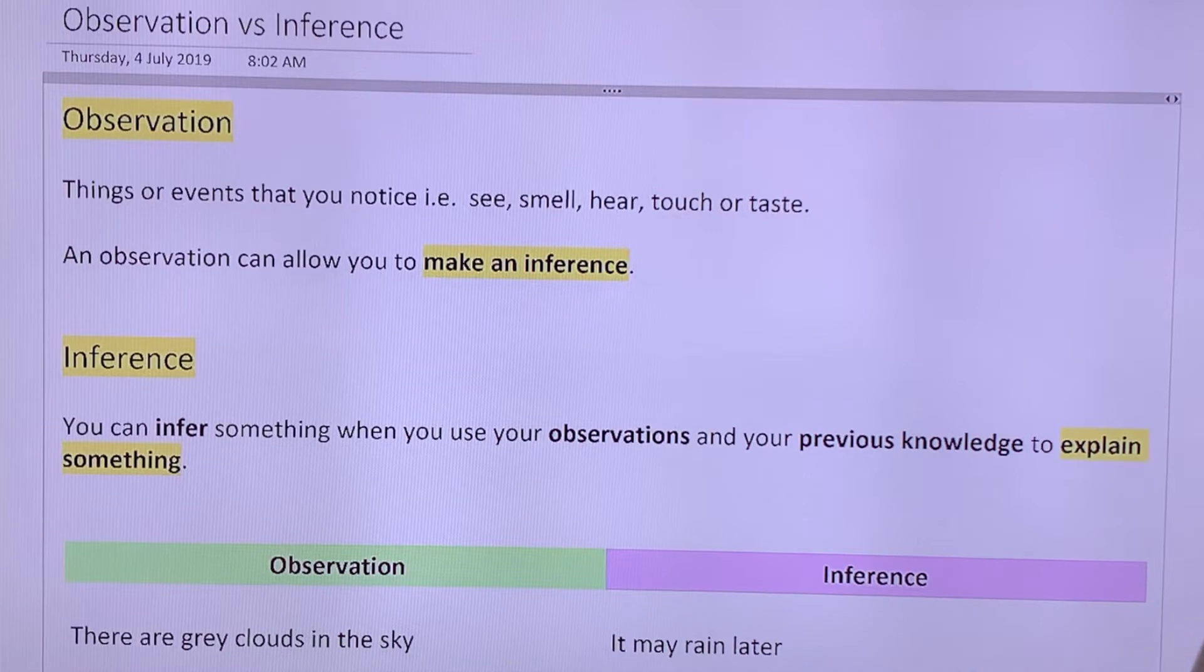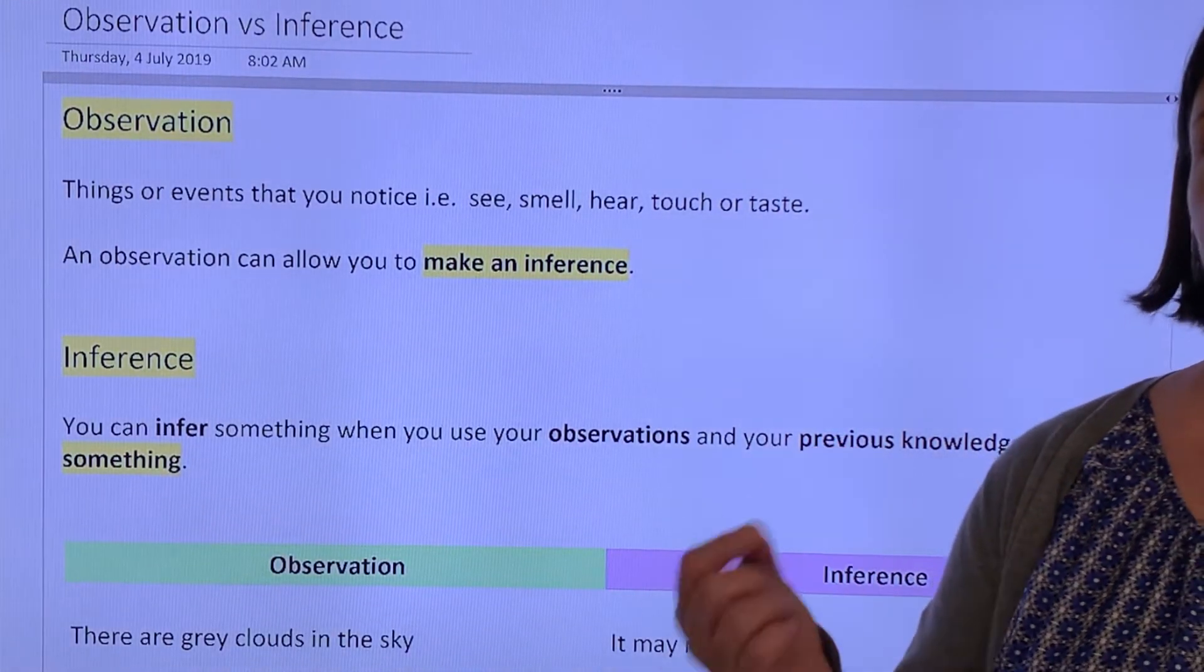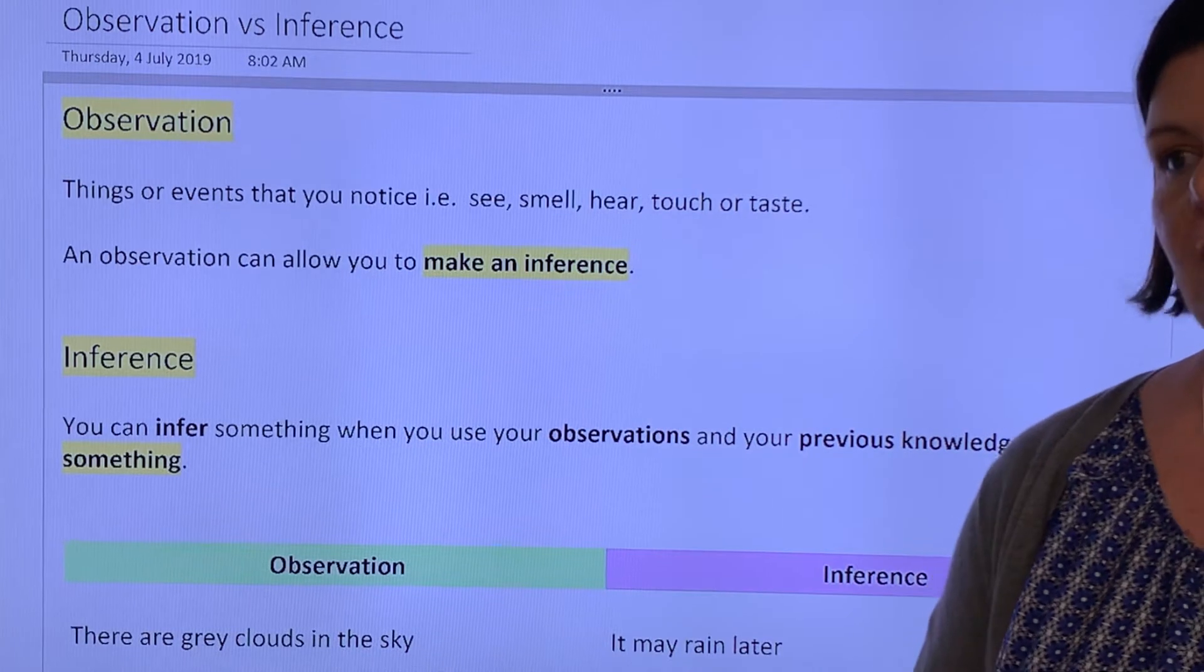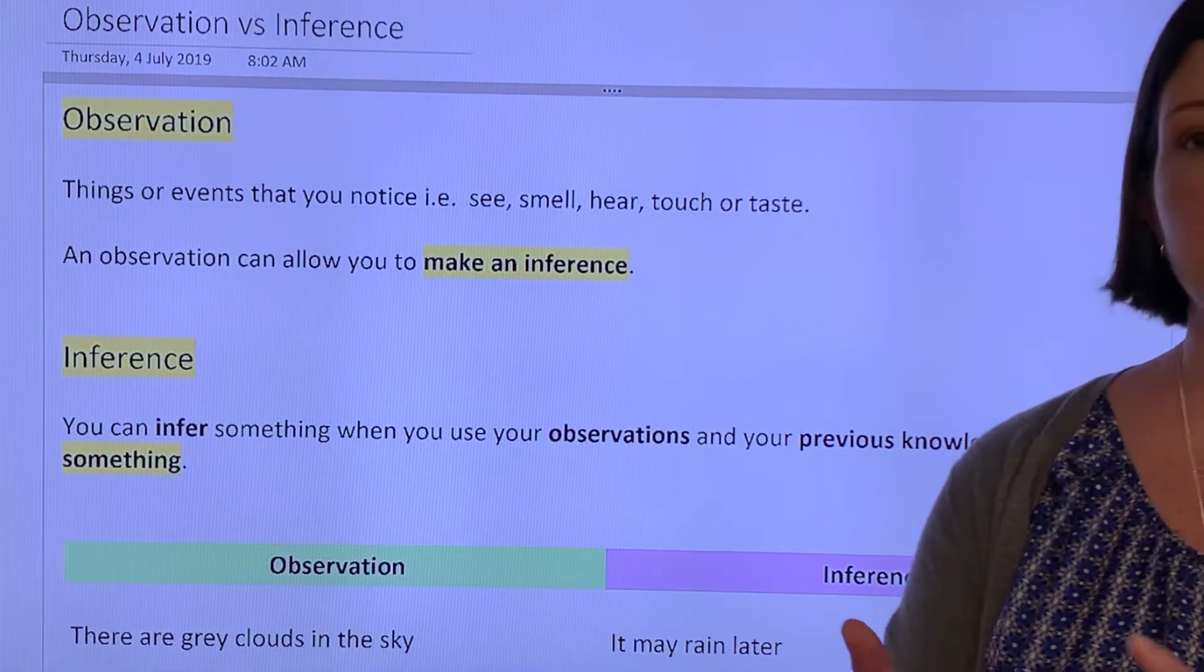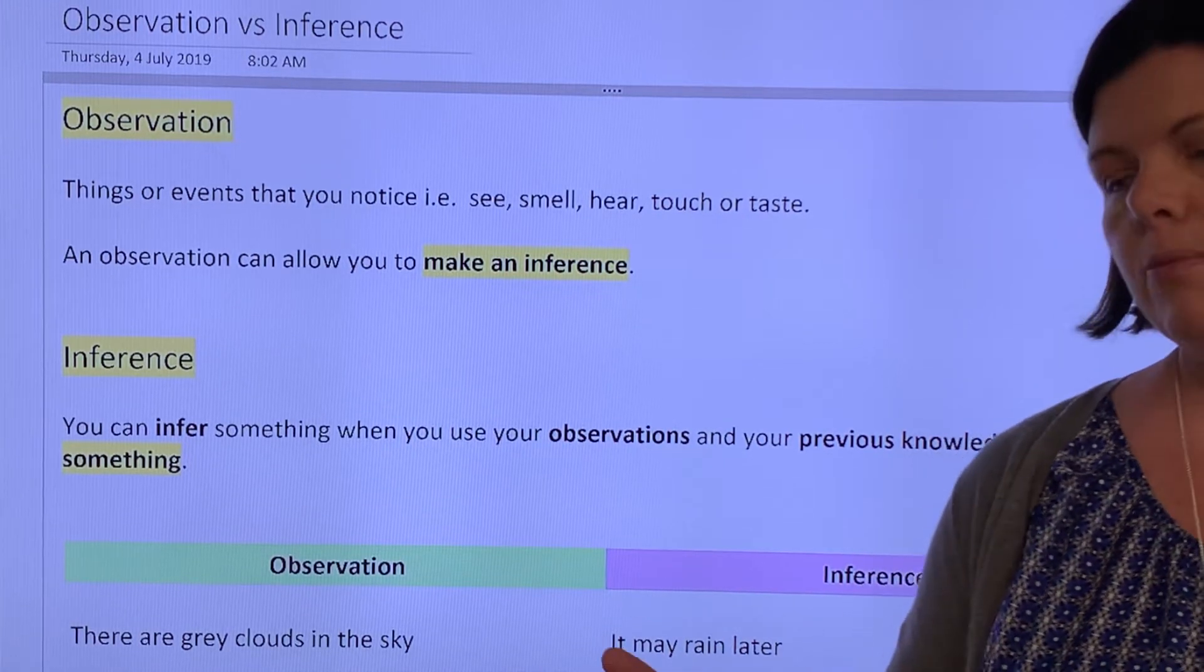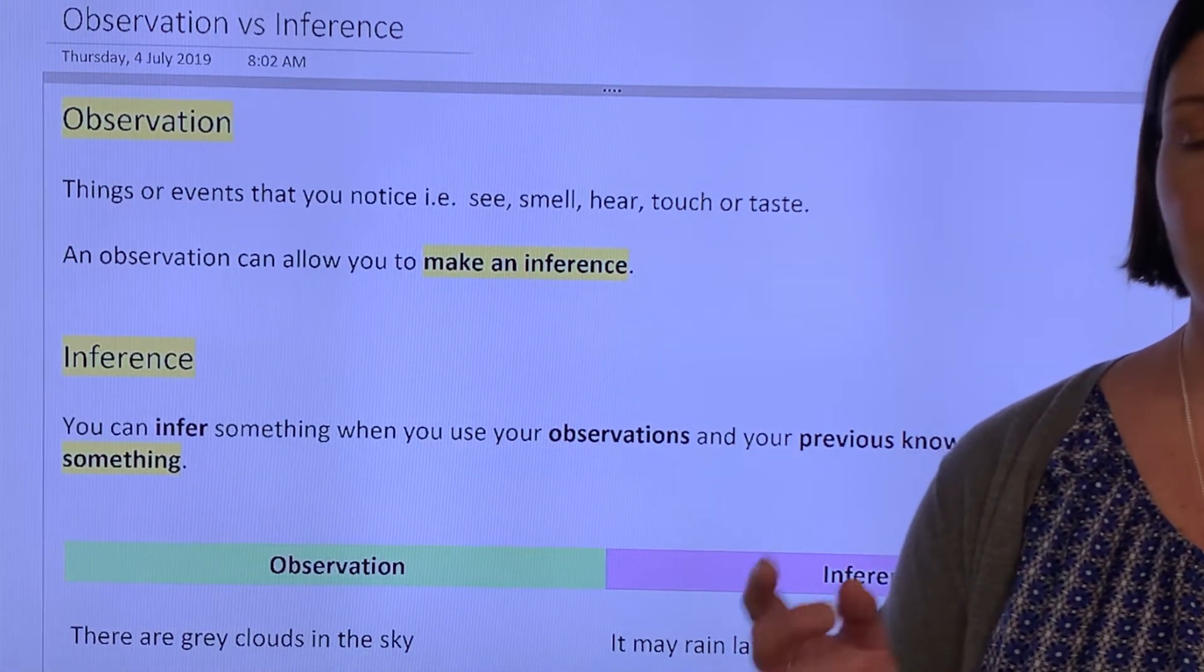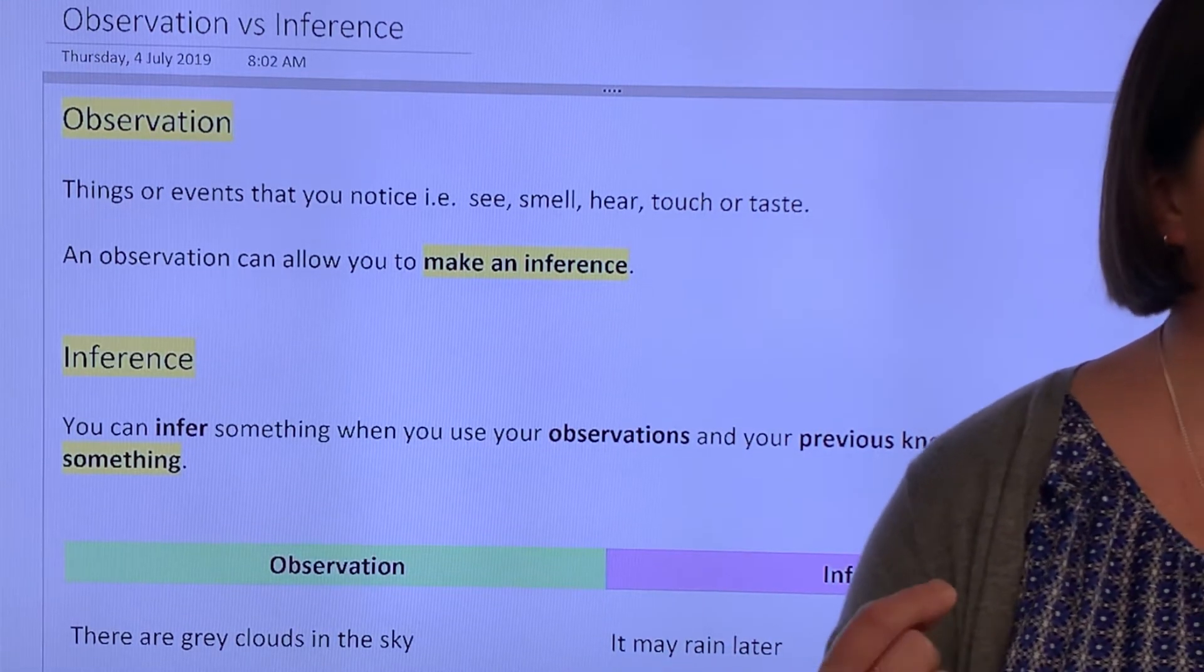So I need to make observations to then infer things. Now, in terms of classification in the environment, you might go out to an ecosystem and you can make observations. The air temperature is this. There has been this amount of rain. There are this number of trees. These animals are present. This many animals are present. You can make observations. And from those, you can then make inferences about the health of an ecosystem.